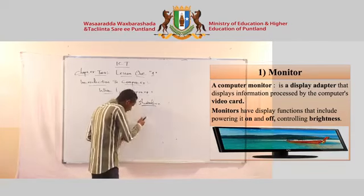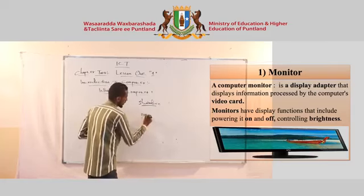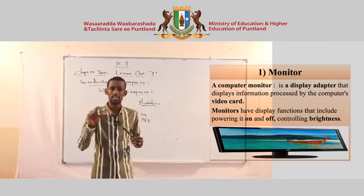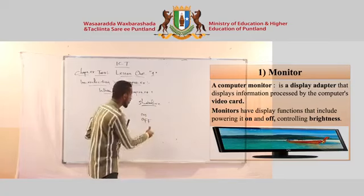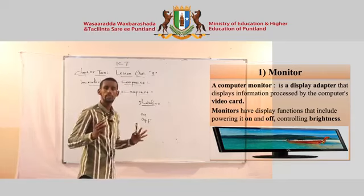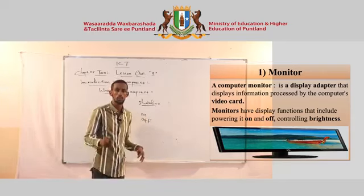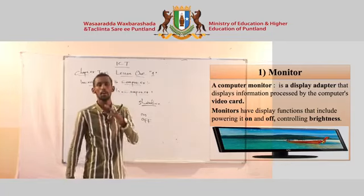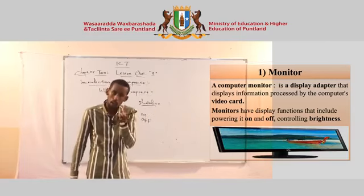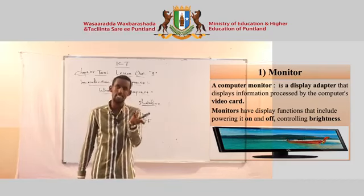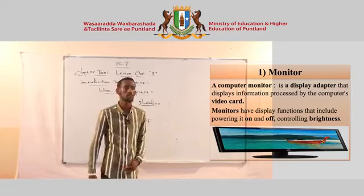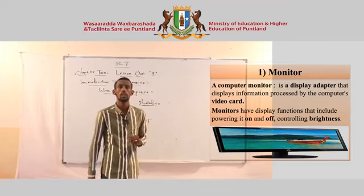When you use the monitor, you can power it on or off. You can also control brightness. When you have a display, you can see how much brightness it has. Powering it on and off — what does that mean for the computer? It is controlling brightness, and you can see your primary display.